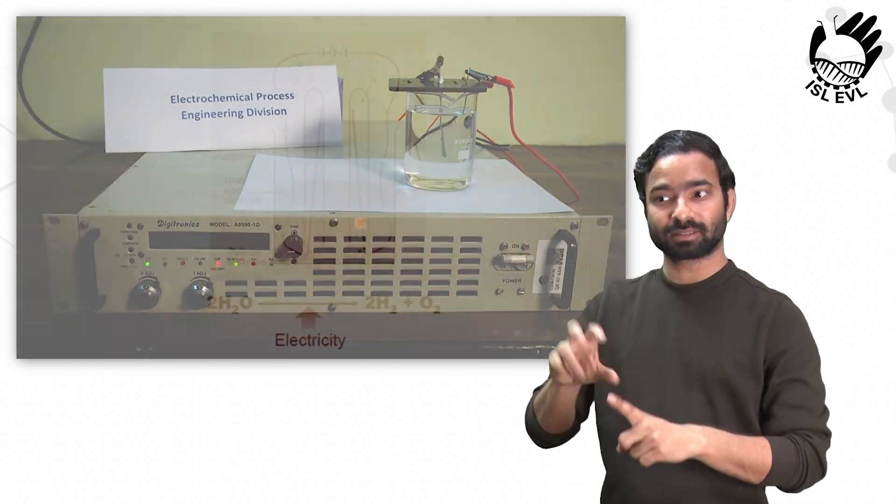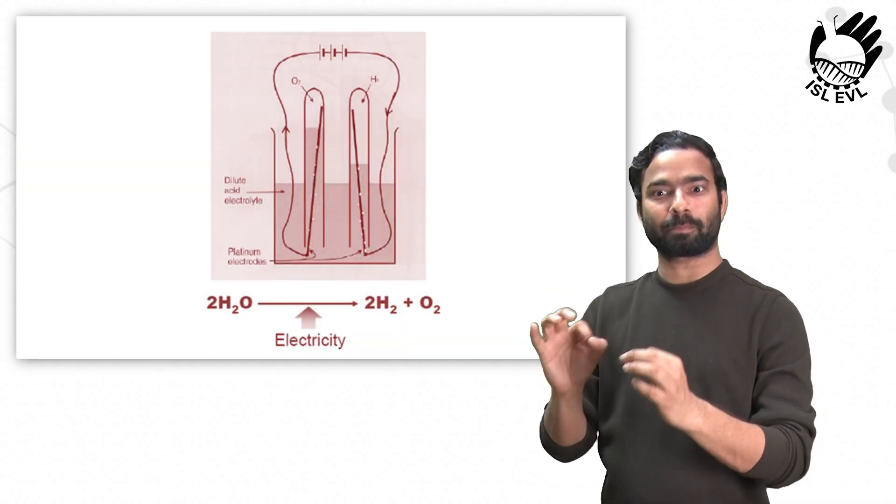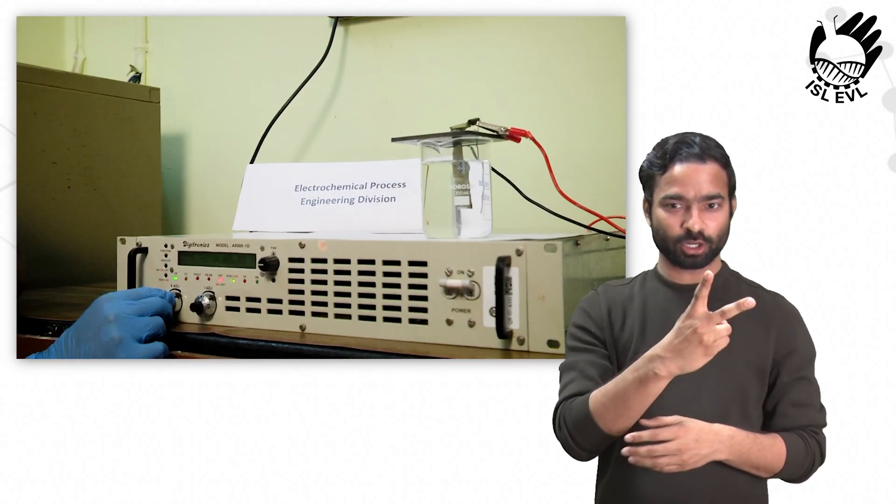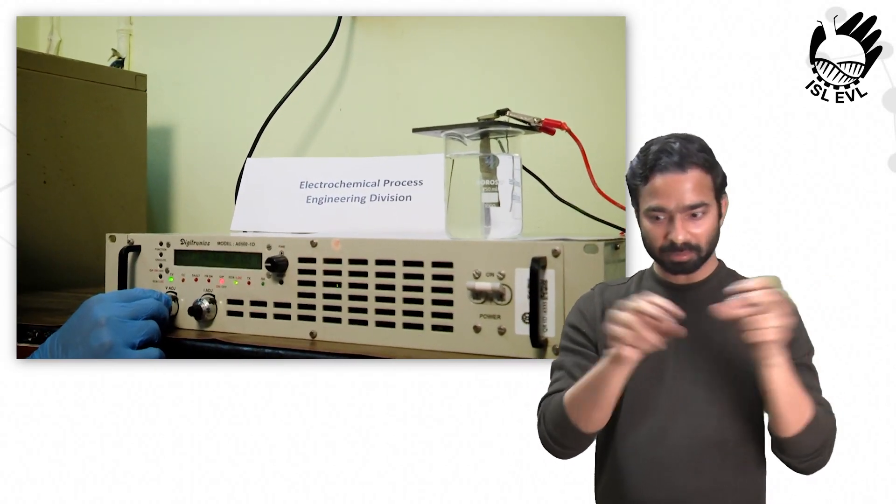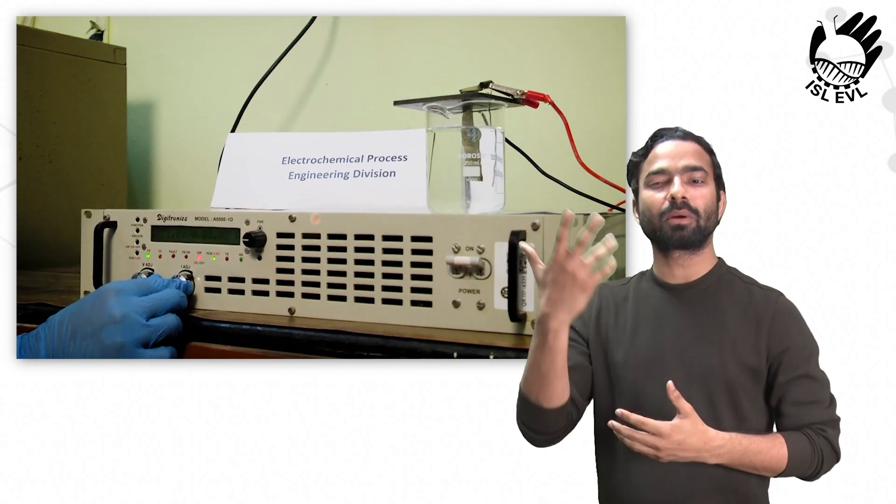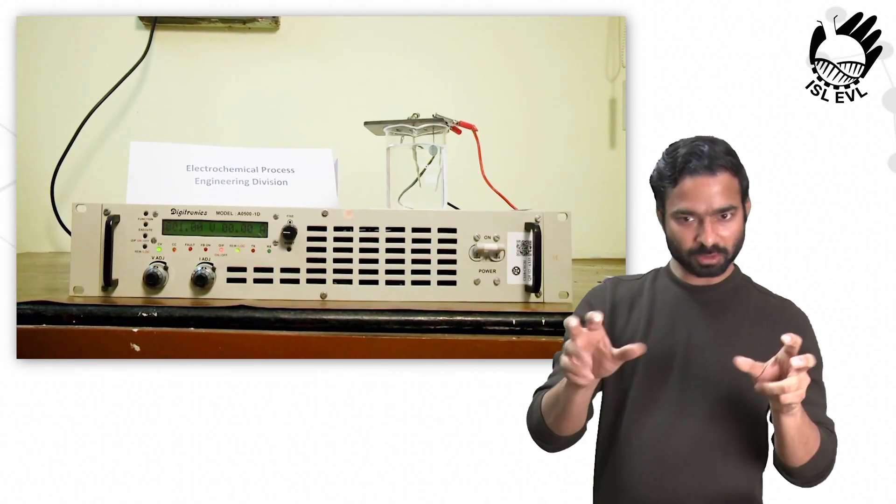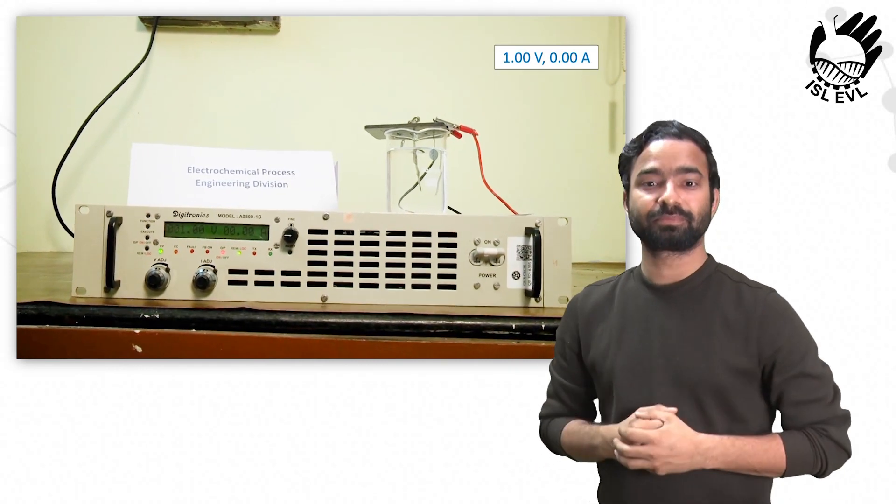We are going to demonstrate the principle of water splitting into hydrogen and oxygen gas in a basic electrochemical cell. Now we are going to perform the electrolysis at various cell voltages and record the current. When the voltage is set at 1 volt, there is zero current flowing into the reactor.